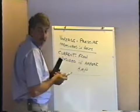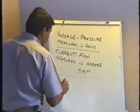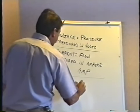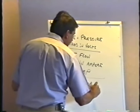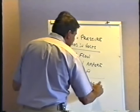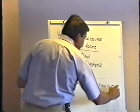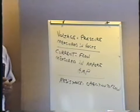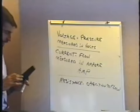So voltage we will measure with our meter. Current we don't have to measure. And then there's one more term we want to look at: resistance. Resistance is defined as the opposition to the flow of electric current.